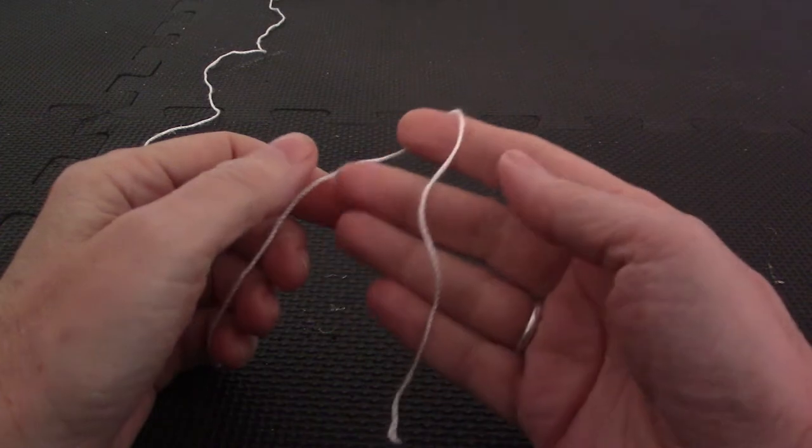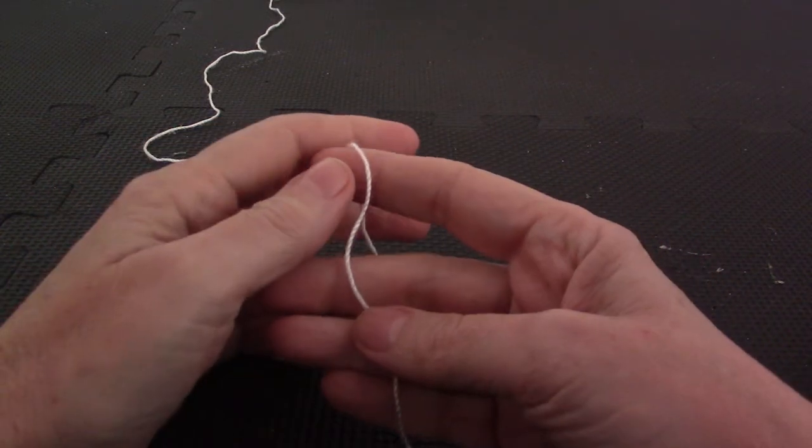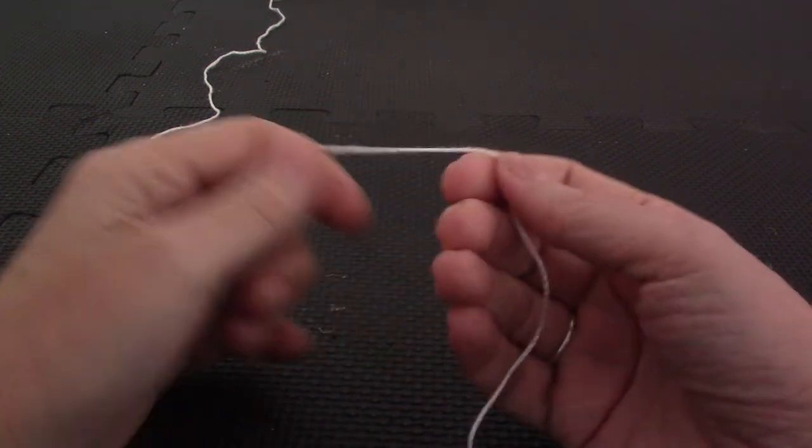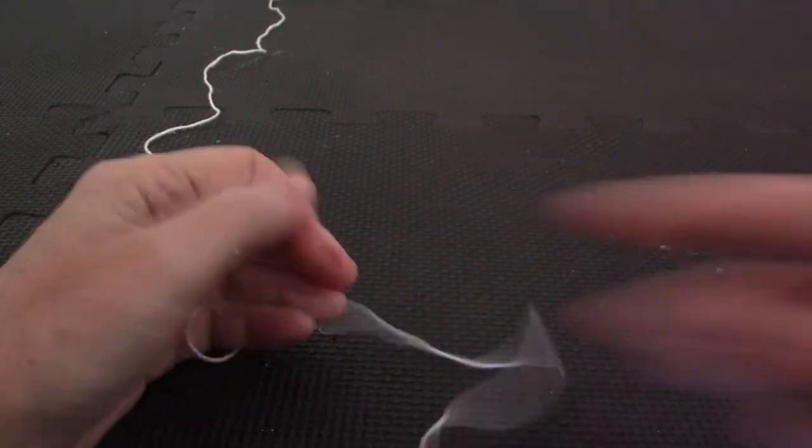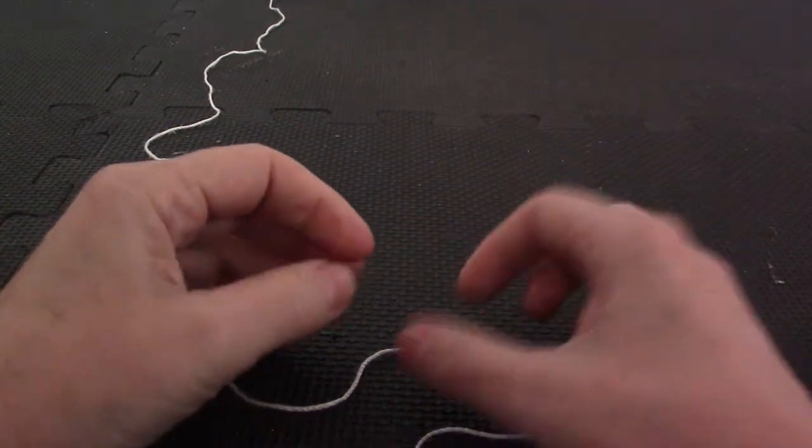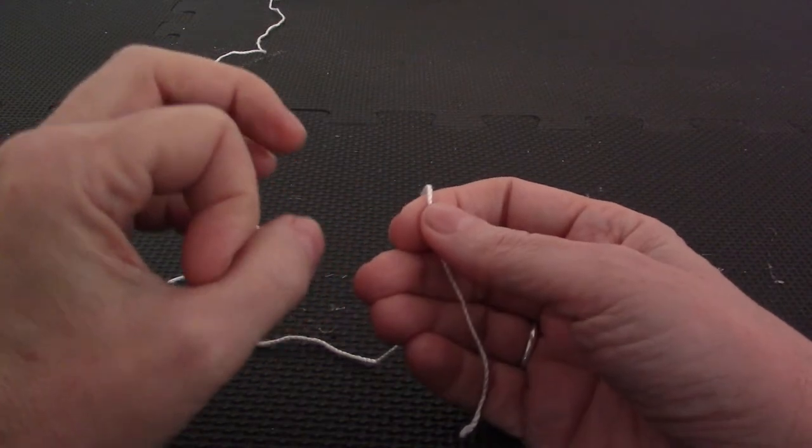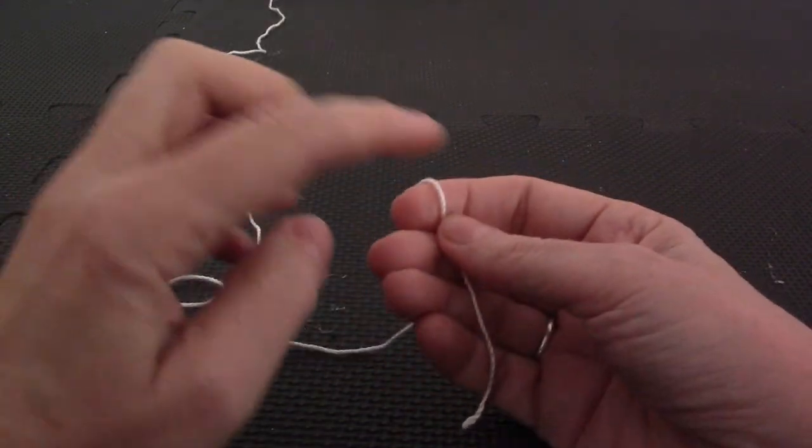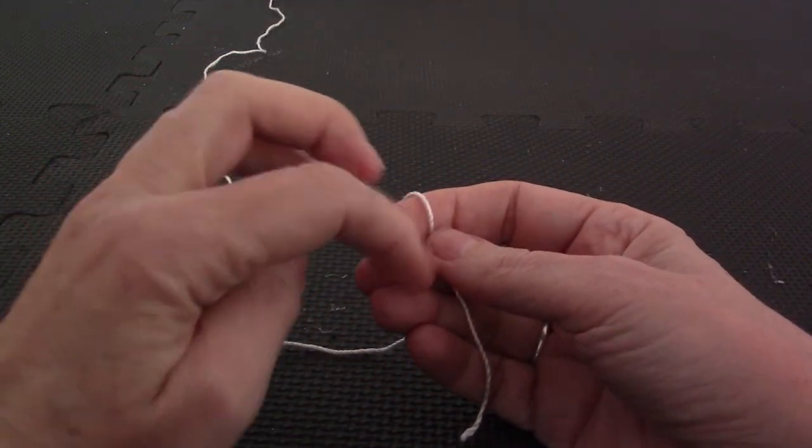Welcome to the video on the double magic loop. The double magic loop came about by people who wanted to crochet in the round but didn't like the little hole when you do a chain loop in the middle.